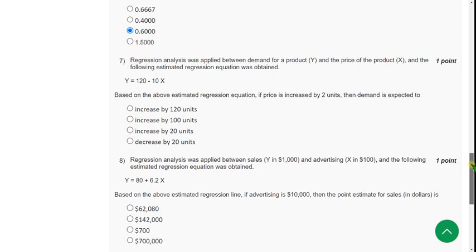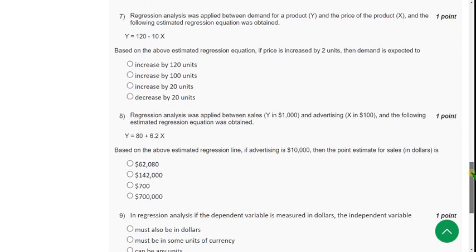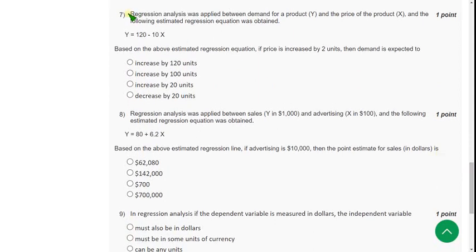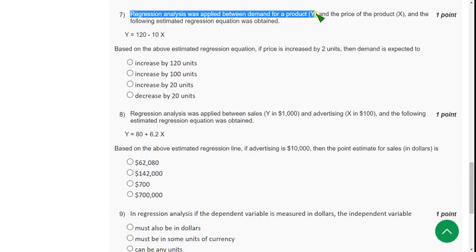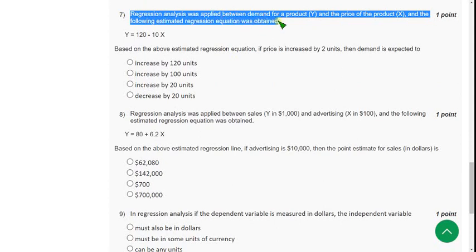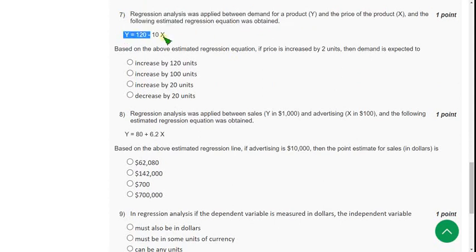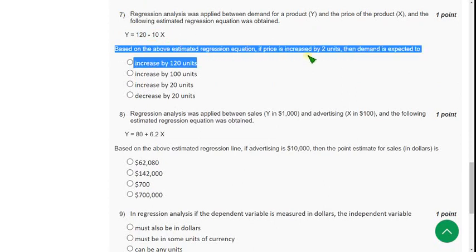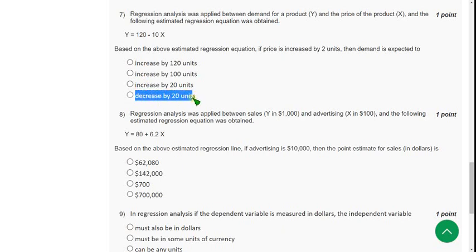And moving on to the seventh one. For seventh question, regression analysis was applied between demand for a product Y and price of a product X, and the following estimated regression equation was obtained. Y is equals 120 minus 10X. So based on the above estimated regression equation, if price is increased by two units, then demand is expected to be. So for seventh question, the answer is fourth option. Decrease by 20 units. Decrease by 20 units.